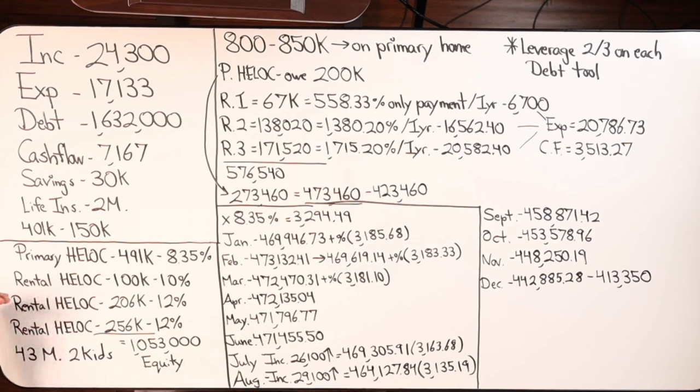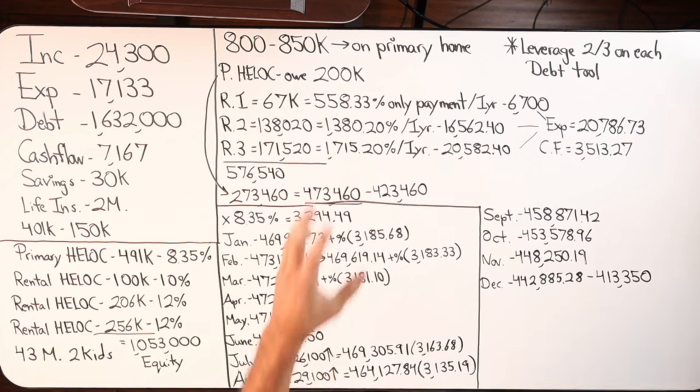We have a rental HELOC, so a HELOC on a rental. Typically HELOCs on rentals have higher interest rates. Also in the second position for $100,000 at 10%, another one at $206,000 credit limit at 12%, and the last one is $256,000 at 12%. So if you were to add everything up, we have over a million dollars of access to equity to do the particular job that this person wants to do.